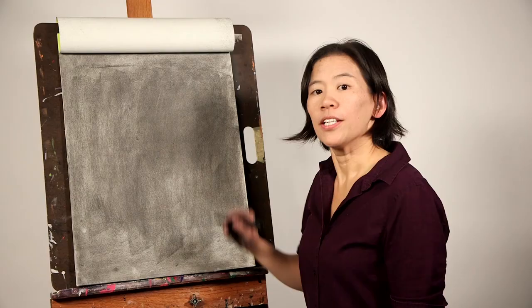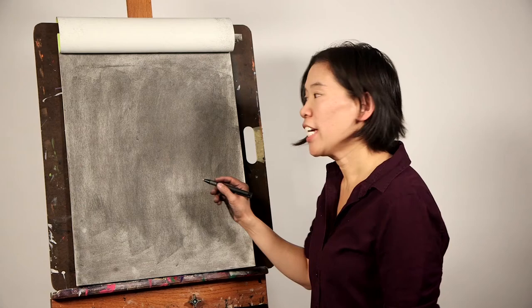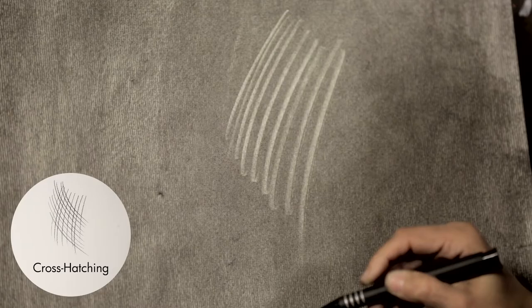The eraser stick is also great for crosshatching. Crosshatching is a drawing technique where you take groups of lines and you cross and layer them on top of each other.